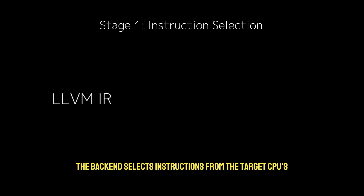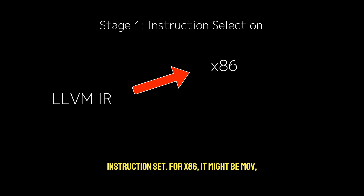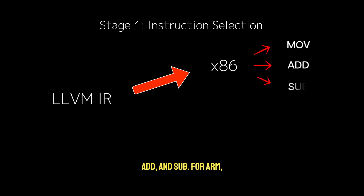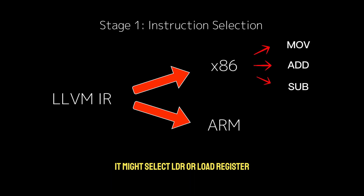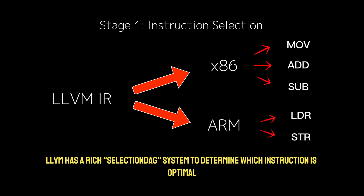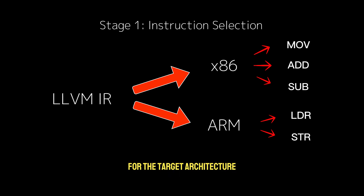The backend selects instructions from the target CPU's instruction set. For x86, it might be move, add, and sub. For ARM, it might select LDR (load register) and STR (store register). LLVM has a rich selection DAG system to determine which instruction is optimal for the target architecture.